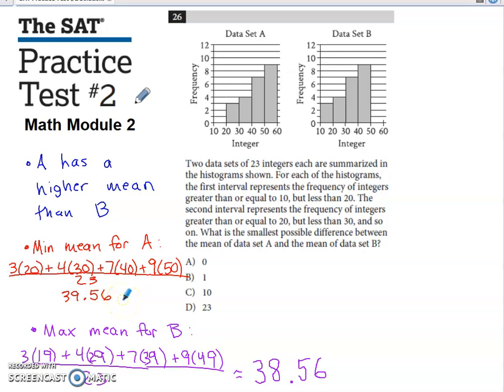Now, if I think about the maximum possible mean for data set B on this stretch of the x-axis, if I assume that every value from data set B on this stretch was the biggest possible value it could have been, keep in mind this goes from 10 to 19. 20 is not included.